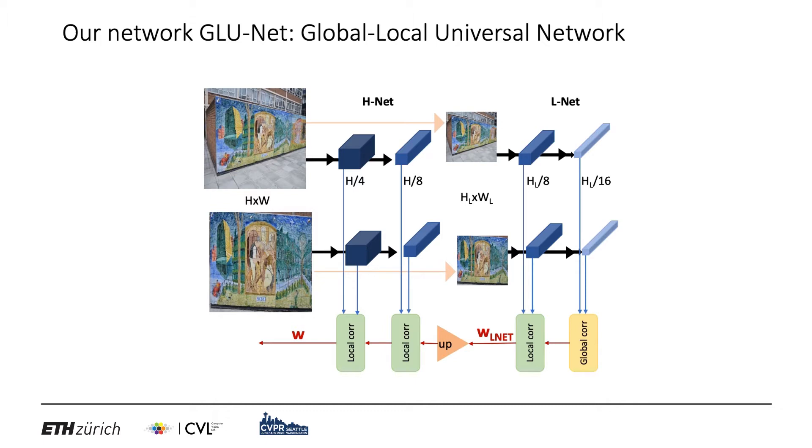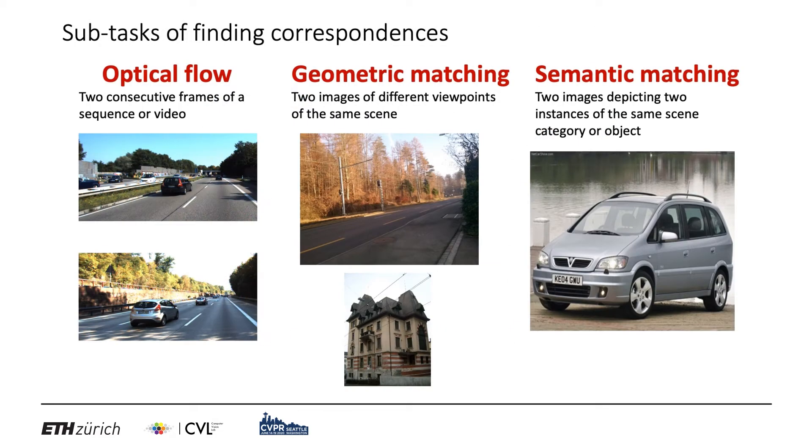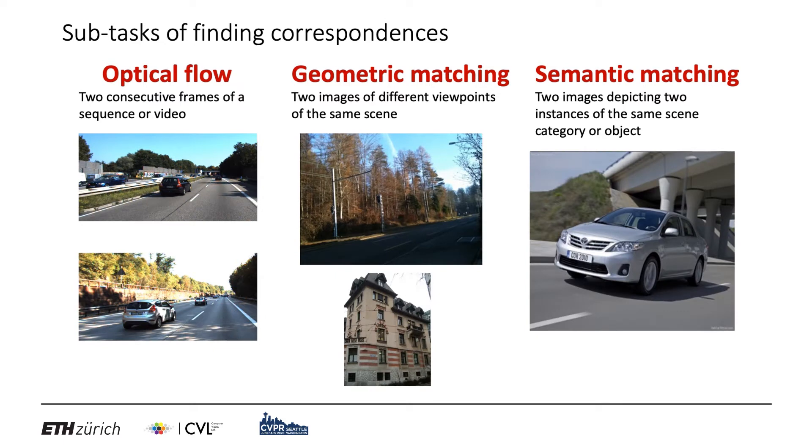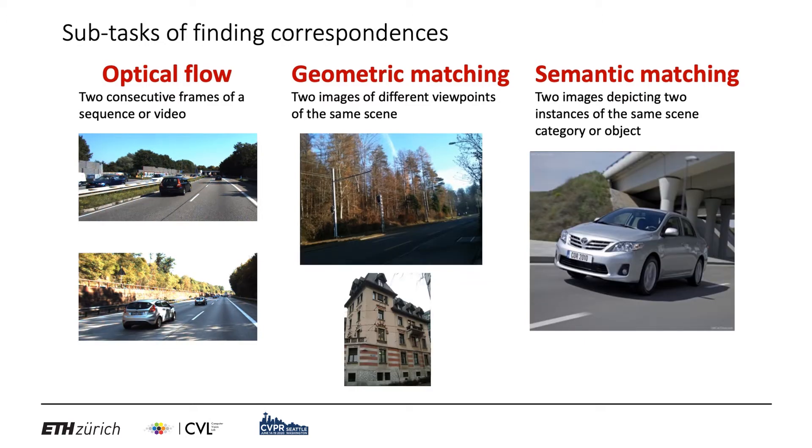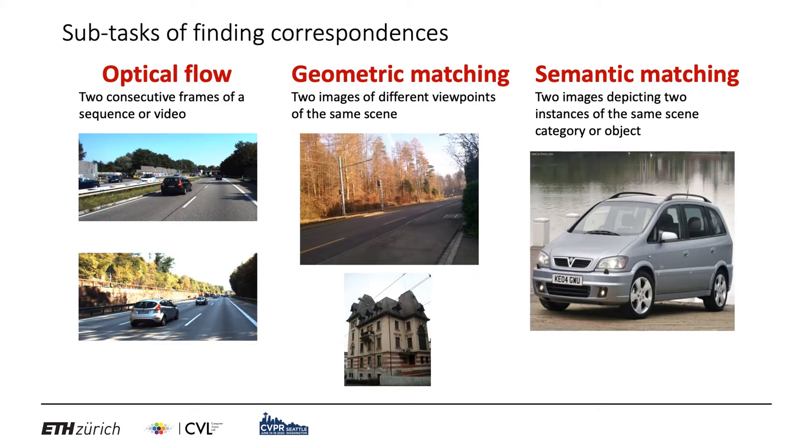Briefly in GLU-NET, we combine local and global correlation layers to be robust to both long and small range displacements, and we also introduce a strategy to take as input any image size. It allows us to create a unified network applicable to all three tasks of optical flow, geometric matching, and semantic matching. This is contrary to other networks that are specialized in only one task.